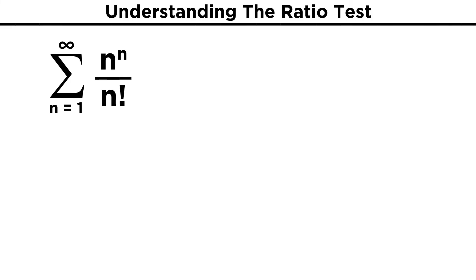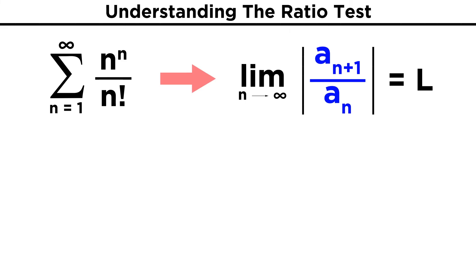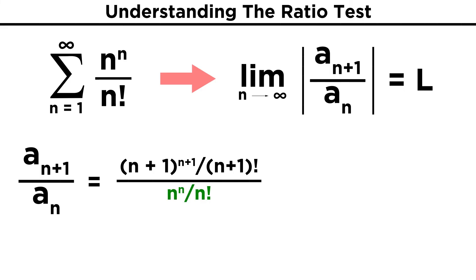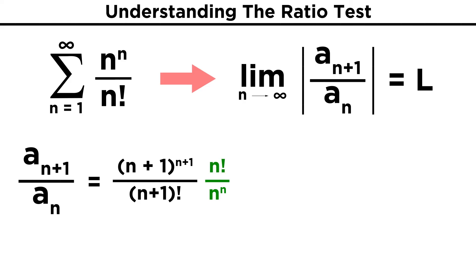Let's try one example that requires this ratio test. How about the series n to the n power over n factorial? We need to get the ratio of A sub n plus one over A sub n. For A sub n plus one, we just put n plus one wherever n was, so we get the quantity n plus one raised to the n plus one power over n plus one factorial. Then we divide that by the original series, n to the n over n factorial, and we take the absolute value of all that. But everything is positive, so the brackets just go away.